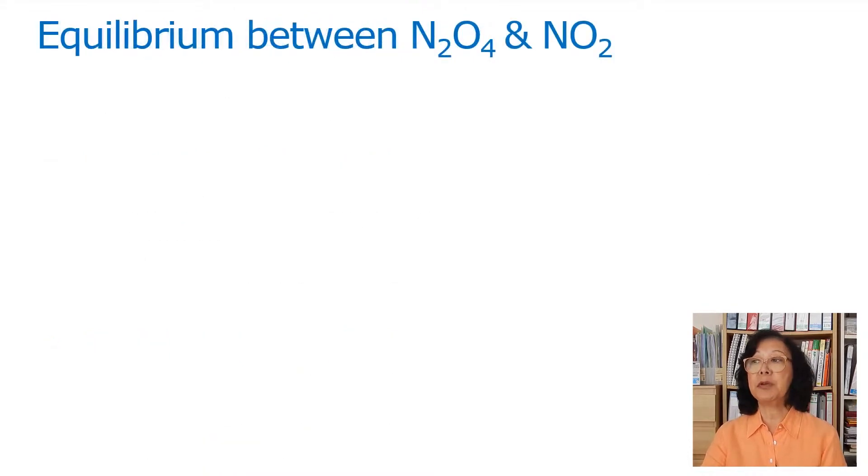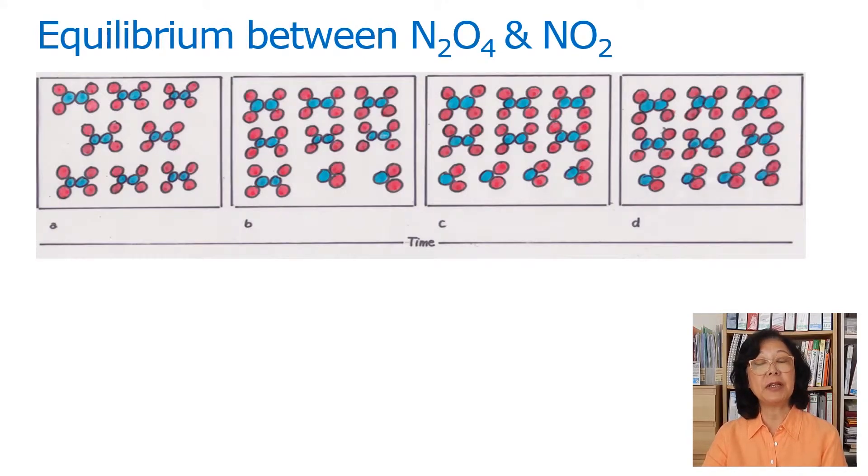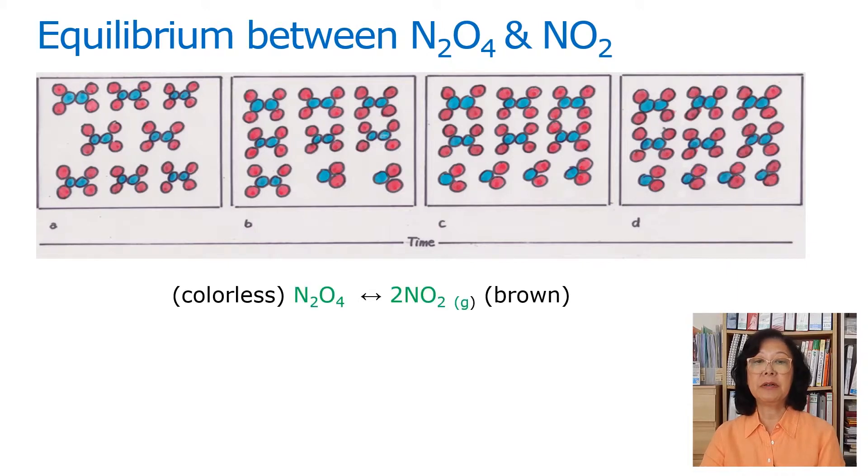Let's look at the equilibrium between N2O4 and NO2. Here's a diagram showing them at different times. N2O4 is colorless and is converted into the brownish gas NO2 from one mole into two moles.